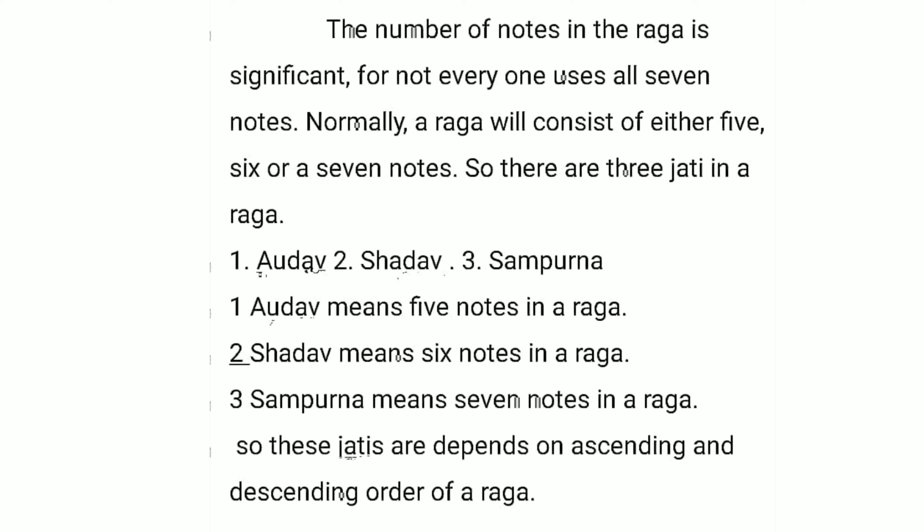Similarly, if ascending has six notes and descending has five notes, the jati will be Shadav-Audav — Shadav because ascending has six notes, and Audav because descending has five notes. That is jati. Thank you.